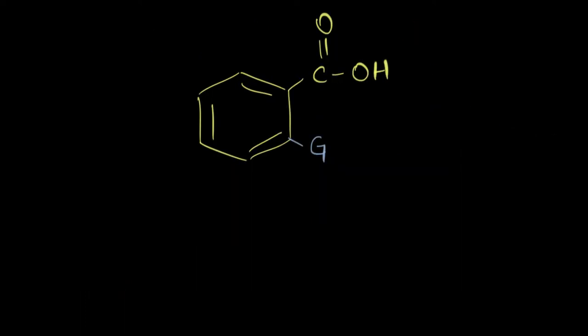To understand its acidic strength, we need to find the stability of its conjugate base. The conjugate base is when we remove the most acidic hydrogen. We see one hydrogen here and four more hydrogens attached to this benzene ring. Let's assume for a second that this G group, which is any generic group, has no hydrogens in it.